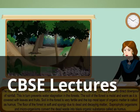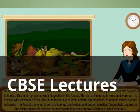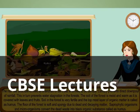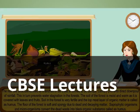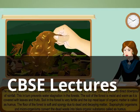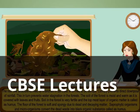Soil: The soil of the forest is moist and warm as it is covered with leaves and fruits. It is very fertile and the topmost layer of organic matter is called humus. The floor of the forest is soft and spongy due to dead and decaying matter. Saprophytic organisms and microorganisms convert the dead waste into a black organic substance called humus.